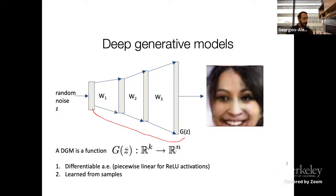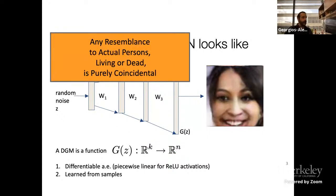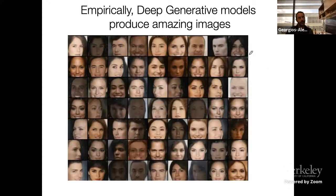This is a piecewise linear function that's differentiable almost everywhere involving matrix multiplications and ReLU activations. These functions are learned from samples, so they're data-driven. I want to emphasize that this is not a real person — this is just a generated image produced by a GAN when we fed in a random noise Z as input. Empirically, these deep generators have been producing amazing results every year since 2017, and they've passed what I'd call a visual Turing test.